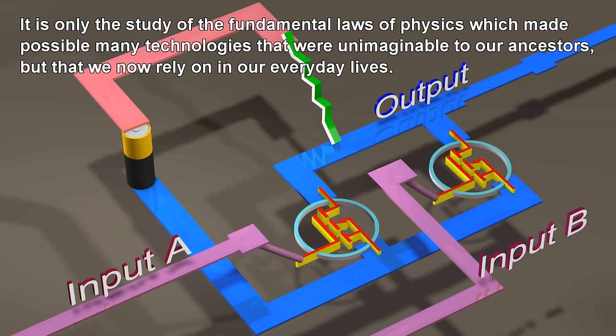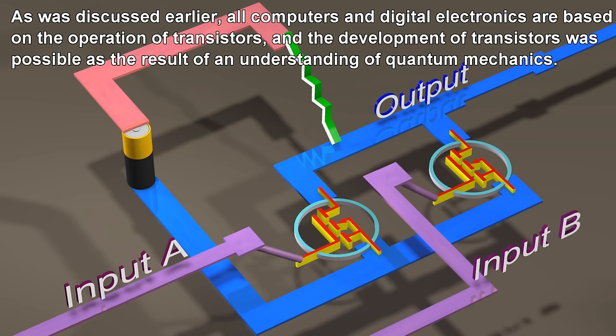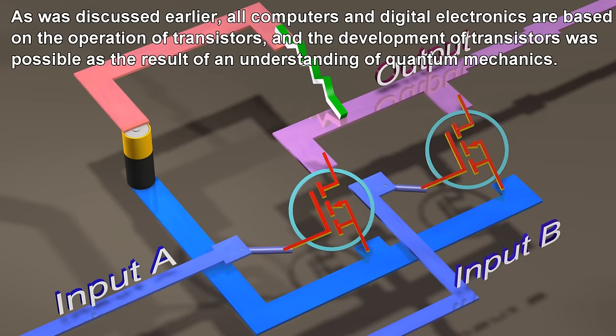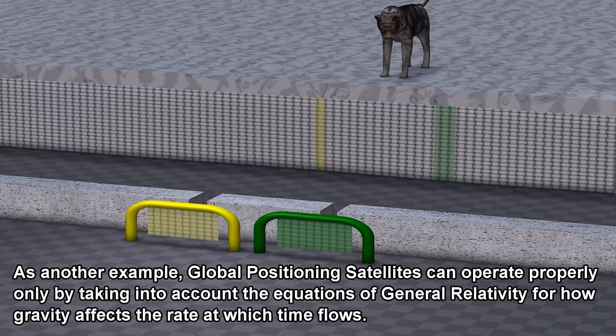It is only the study of the fundamental laws of physics which made possible many technologies that were unimaginable to our ancestors, but that we now rely on in our everyday lives. As was discussed earlier, all computers and digital electronics are based on the operation of transistors, and the development of transistors was possible as the result of an understanding of quantum mechanics.